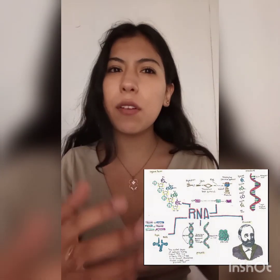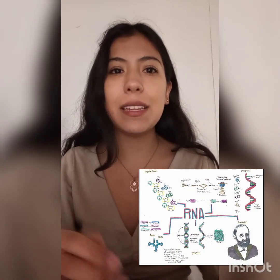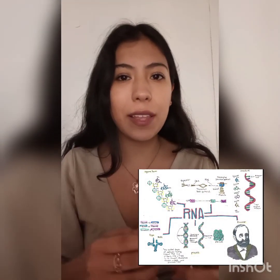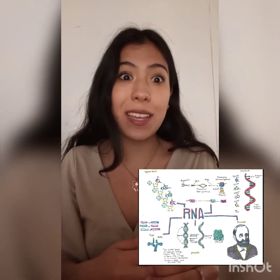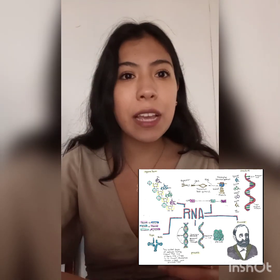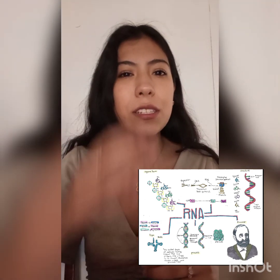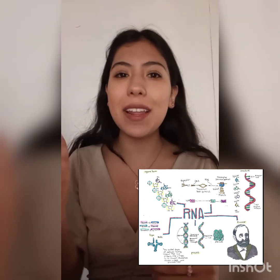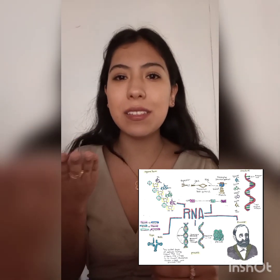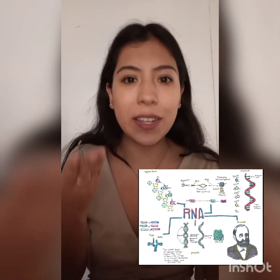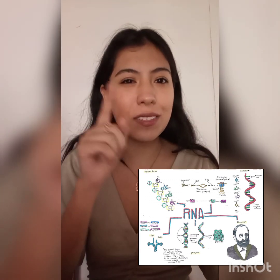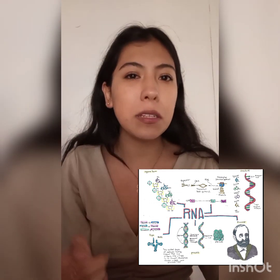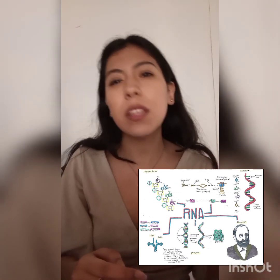Now, the RNA. The RNA or ribonucleic acid is the other type of nucleic acid that enables protein synthesis. Although DNA contains genetic information, RNA is what is understood by cells. It is made up of a single strand, unlike DNA, which has a double strand.